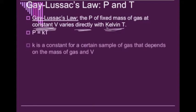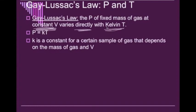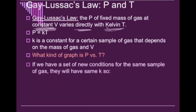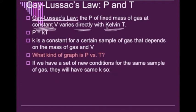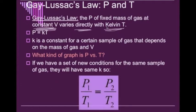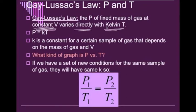Now, we see that as we look at it and draw a graph for it, it creates a constant, and that constant for a certain sample of gas depends on the mass of the gas and the volume. So we're going to see it directly proportional, so we're going to see that straight line like we did with Charles' law. Now, if we have a set of new conditions for the same sample of gas, they will also have the same constant, so we can predict what we have. So this is the equation for our Charles' law: P1 over T1 equals P2 over T2.